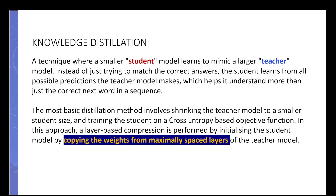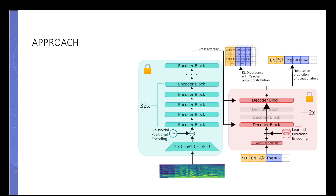The knowledge distillation process involves shrinking the teacher into a smaller student size. You copy the weights from the maximally spaced layers and remove the layers in between, thereby reducing the number of parameters. As you can see in the architecture of the original Whisper, on the left side is the encoder part which we don't touch — we just copy it as-is — and on the right side is the decoder, where we remove some of the middle layers and keep the most distant ones, then try to match performance to the full model with all layers.